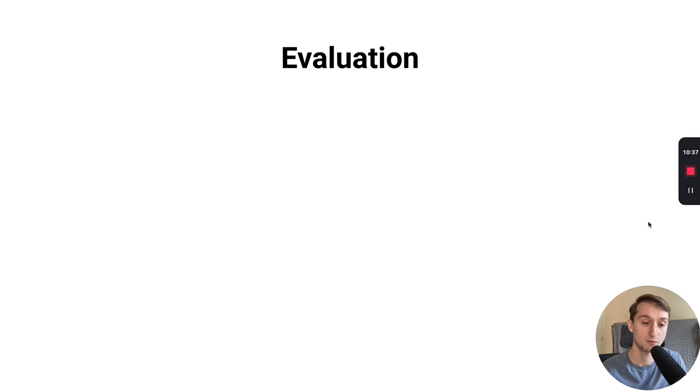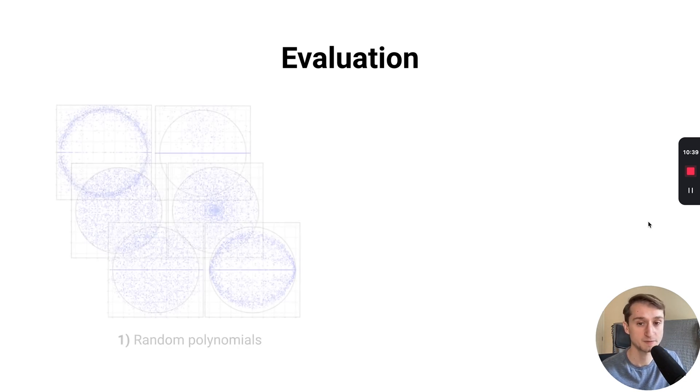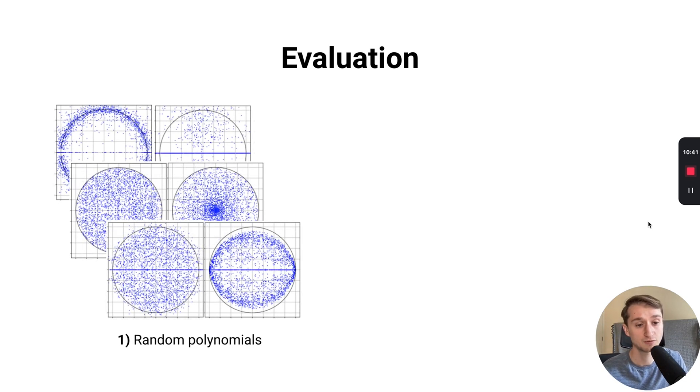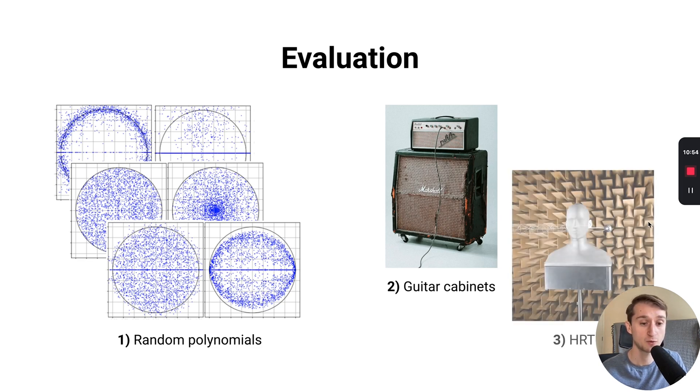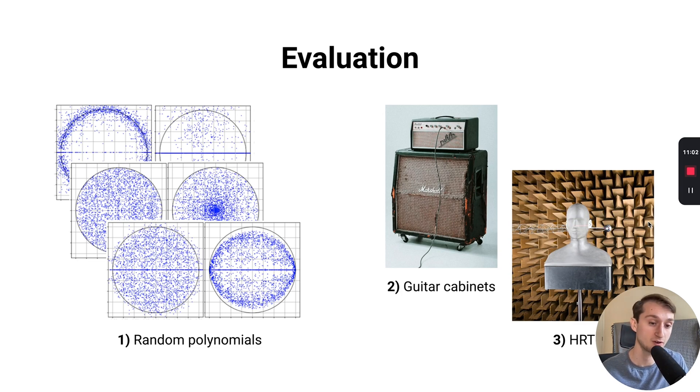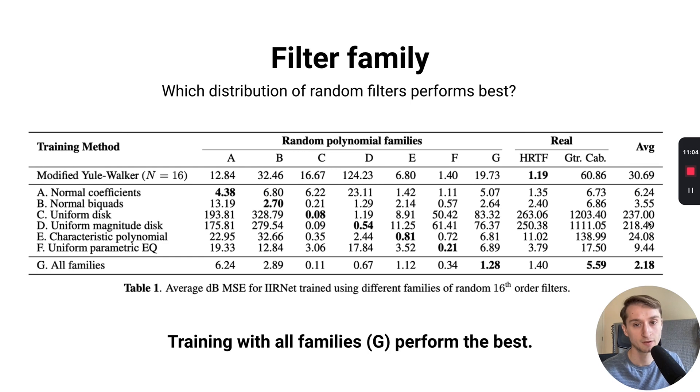Now on to the evaluation and results of these experiments. In order to form our evaluation, we considered three different datasets. First, we created a dataset of our random polynomials from the different families that I introduced earlier. We also looked at real measured guitar cabinet impulse responses, as well as measured HRTFs. We applied some smoothing to those responses and tried an IIR filter to match those originally FIR filter responses.